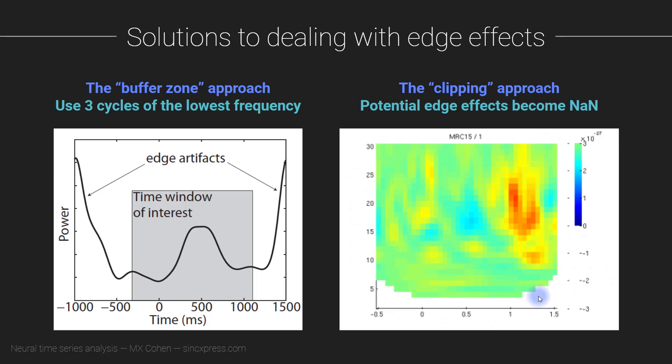The idea is that you estimate what parts of the data might be contaminated by edge effects, and you remove them so that they are definitely not interpreted.